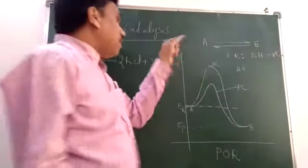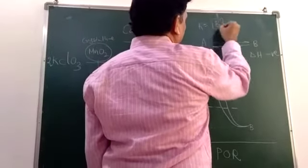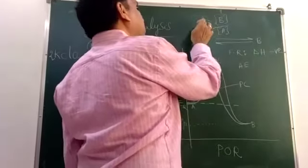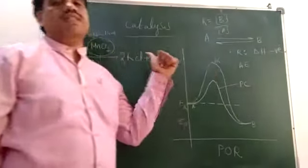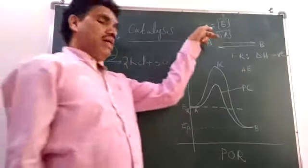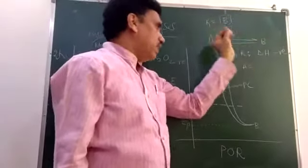And the equilibrium constant K is given by concentration of product B divided by concentration of reactant A. This value does not change because of the presence of a catalyst. A catalyst cannot change the equilibrium constant. It catalyzes both forward and backward reactions to equal extent and it changes the mechanism of reaction.